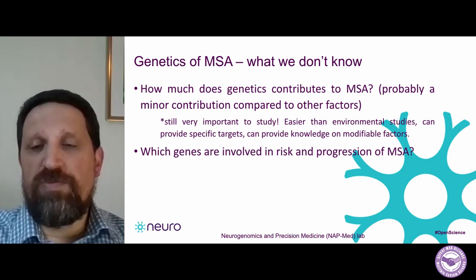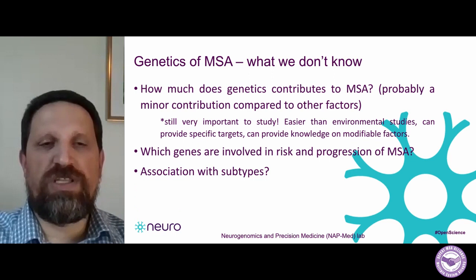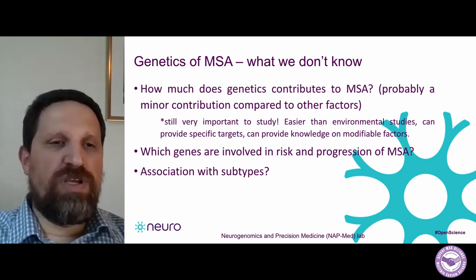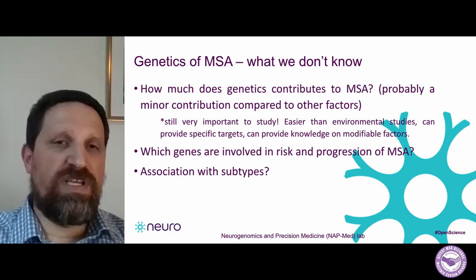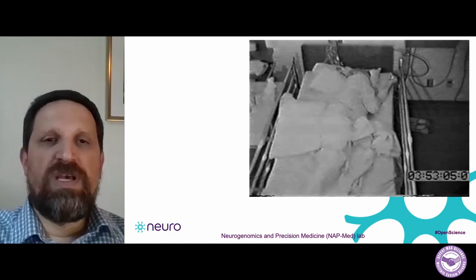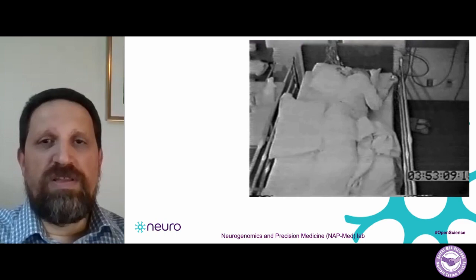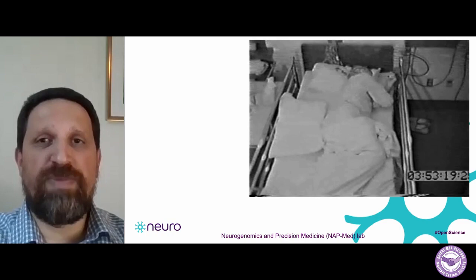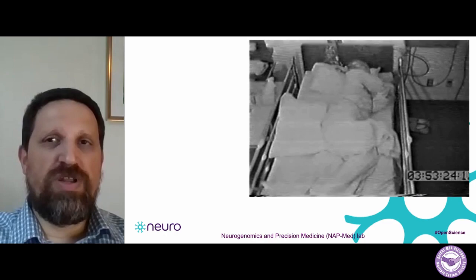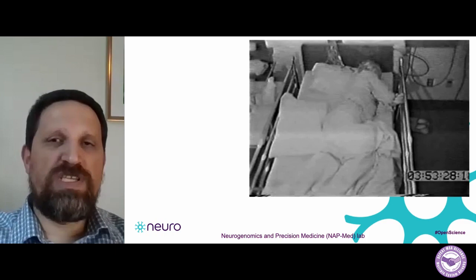We obviously don't know which genes are involved in terms of risk and progression of MSA, and we don't know which genes are associated with the different subtypes. One thing my team is doing is looking at individuals with REM sleep behavioral disorder as a prodromal event that occurs before the onset of Parkinson's disease, dementia with Lewy bodies, or MSA. I'm going to show you a quick movie of an individual with RBD who is lying in his bed, currently dreaming that he is being attacked while walking in the park with his wife.